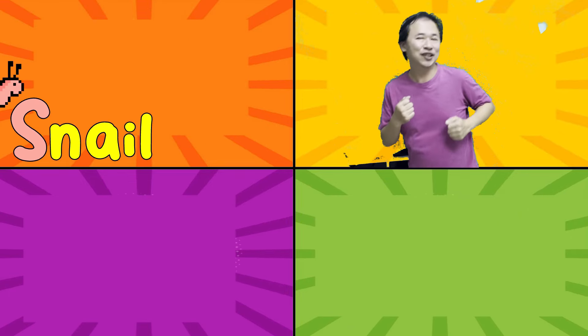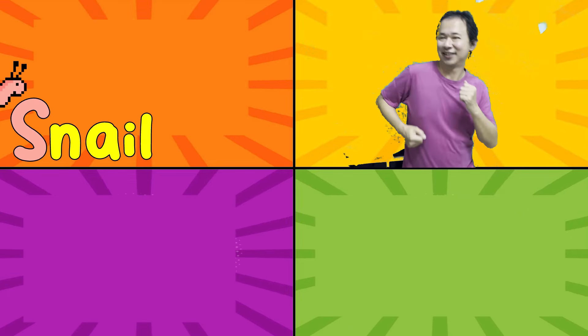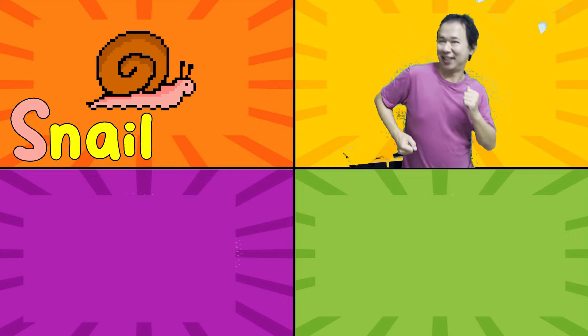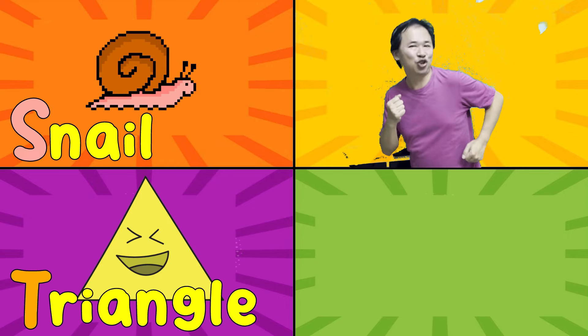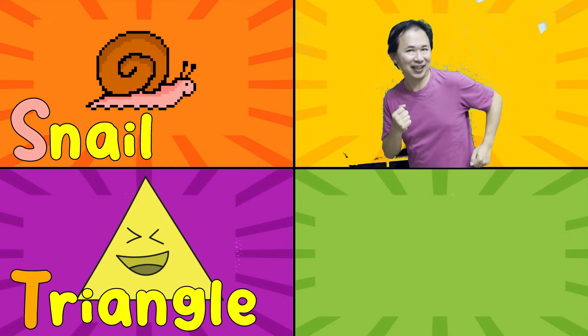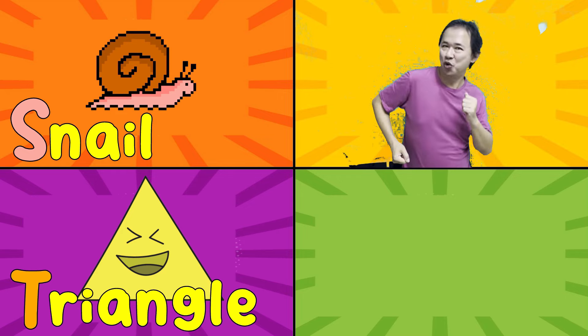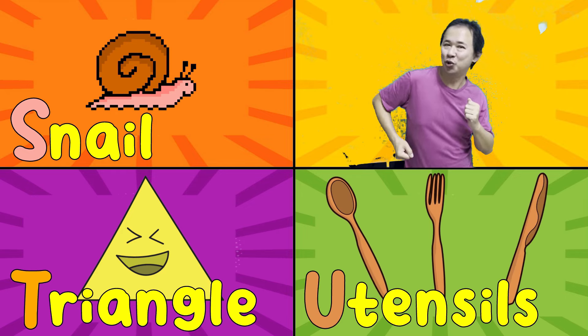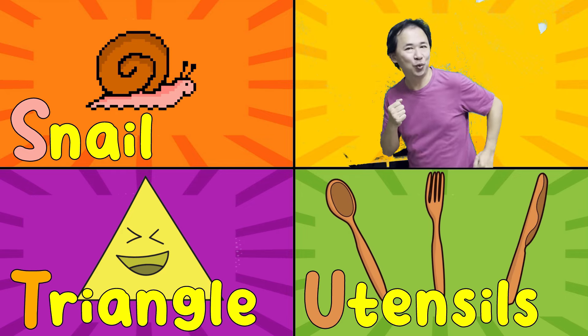S is for snail. T is for triangle. T, T, T. U is for utensils. U, U, U.